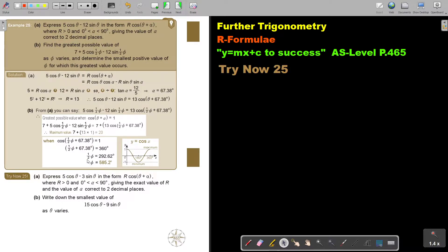Let's look at another example. Express 5 cos theta minus 12 sin theta in the form R cos theta plus alpha where R is bigger than 0 and the acute angle is between 0 and 90 degrees, giving the value of the acute angle correct to two decimal places.